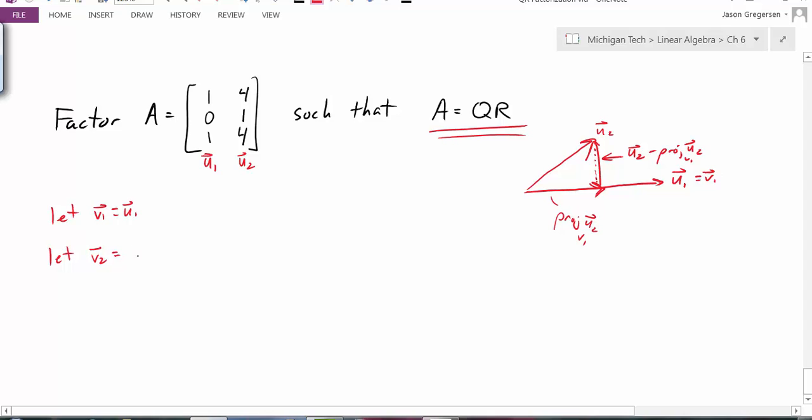So we want V2 to be U2 minus the projection of U2 onto V1. Now what is this piece? Well, we already know what U2 is.